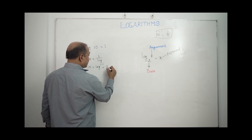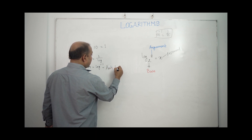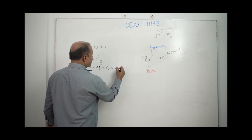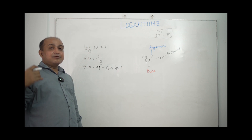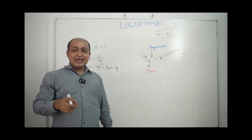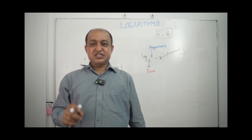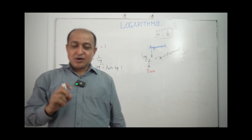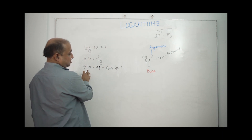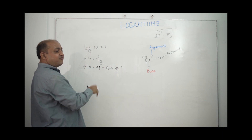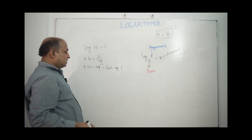Anti-log: if log equals 1, the anti-log of 1 gives us back the original number. On a calculator, we press shift-log 1, which is equivalent to 10. So anti-log of 1 equals 10.